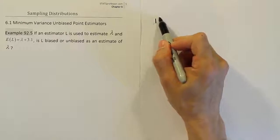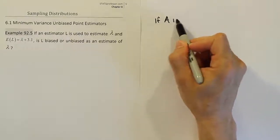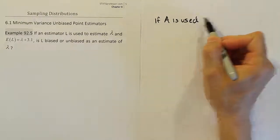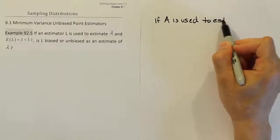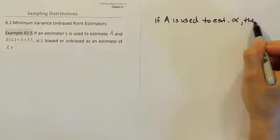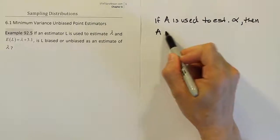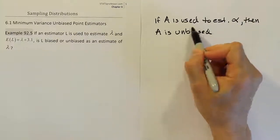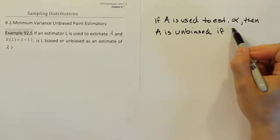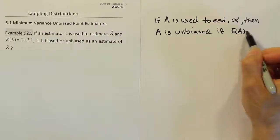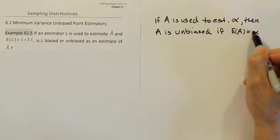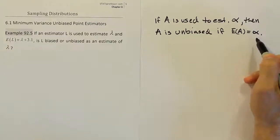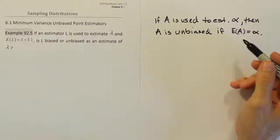For example, if A is used to estimate alpha, then we would say A is unbiased if the expected value of A is equal to alpha. Alpha being the thing it's trying to estimate. So this is the logic of this question.